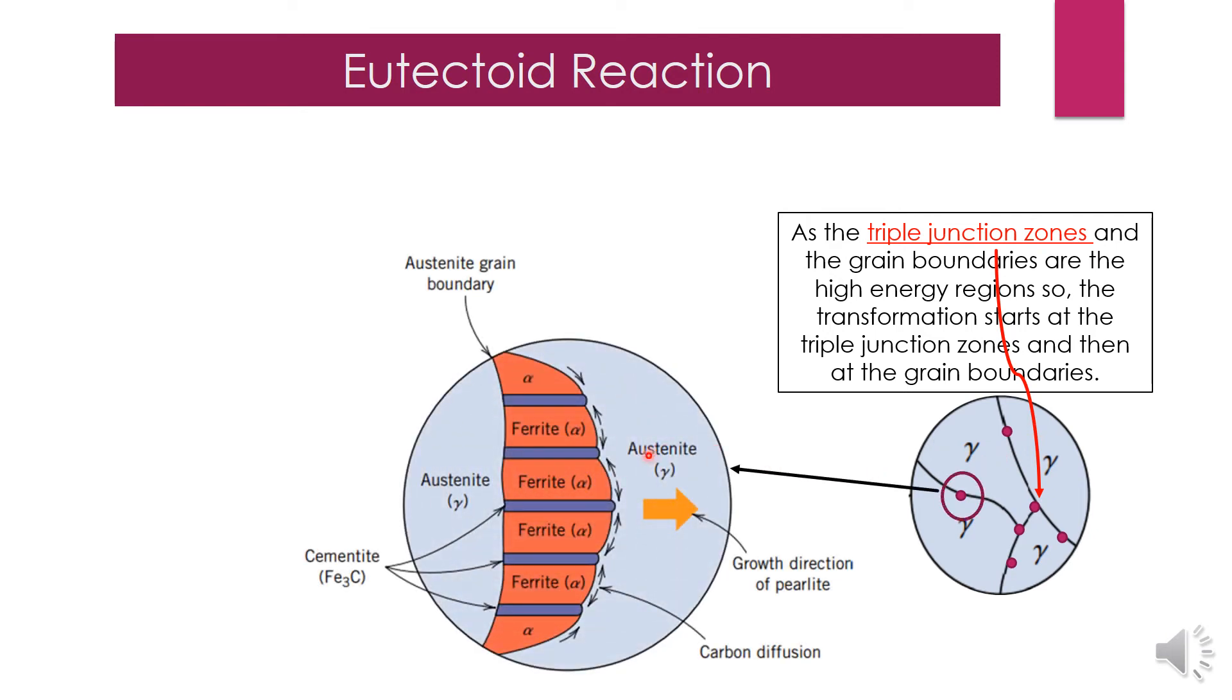Now it's a schematic representation of a transformation that occurs at the grain boundaries. Here the directions of carbon diffusion are indicated by arrows.